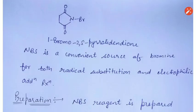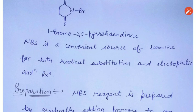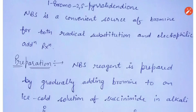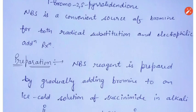N-Bromosuccinimide is a convenient source of bromine for both radical substitution and electrophilic addition reactions. Radical substitution with N-Bromosuccinimide generally occurs in nonpolar solvents, while electrophilic addition occurs in polar solvents.